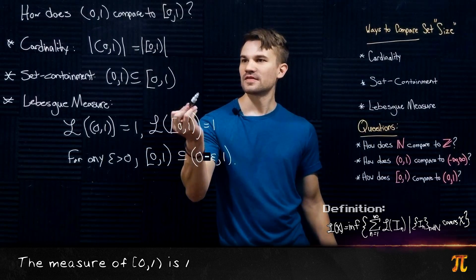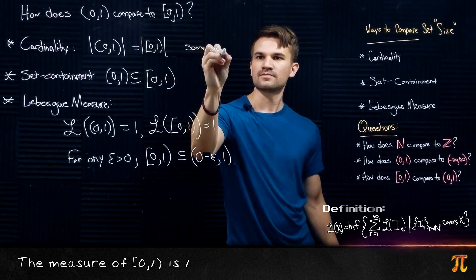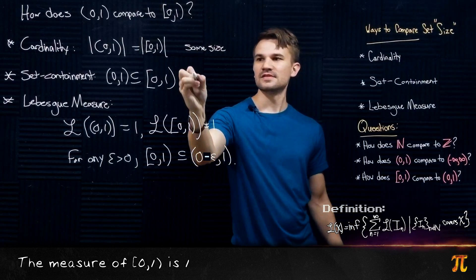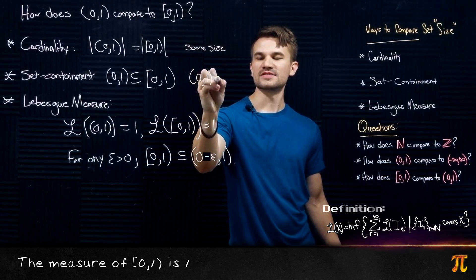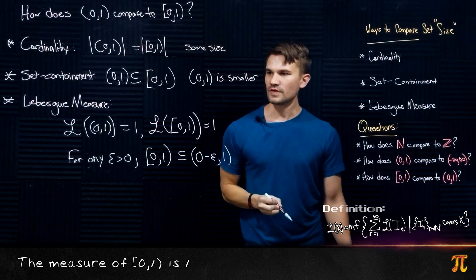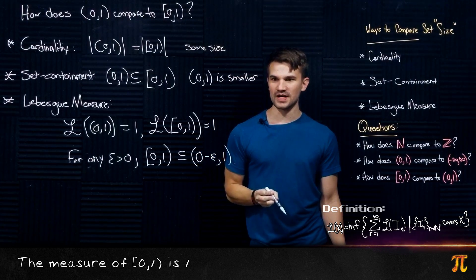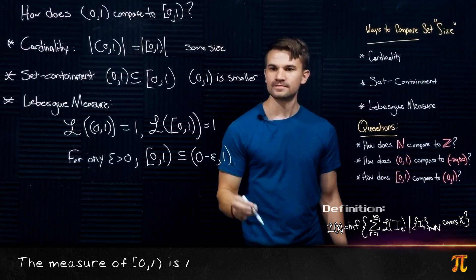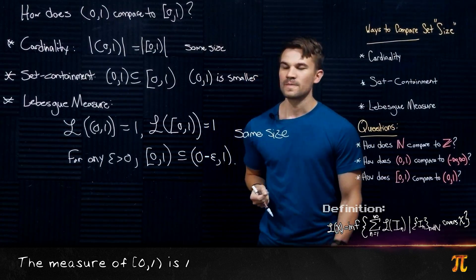So with respect to Lebesgue measure these two sets are the same size. To summarize: cardinality-wise they are the same size, set containment-wise (0,1) is smaller, and Lebesgue measure-wise they are the same size.